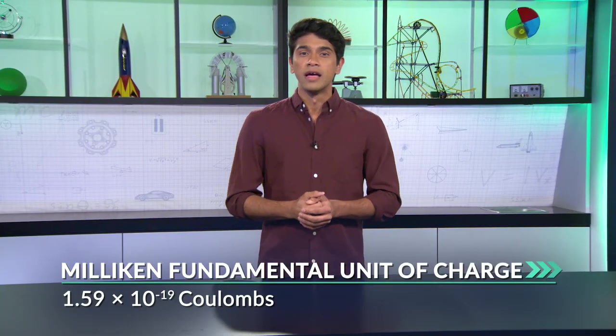With the data, Millikan concluded that each drop had a charge that was a multiple of 1.59 times 10 to the negative 19 Coulombs. And that's important because it established that the electron charges were all integer multiples of a single fundamental unit. They were quantized.